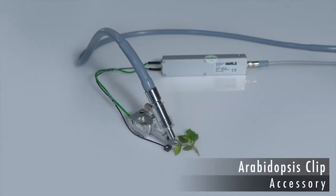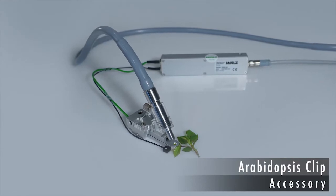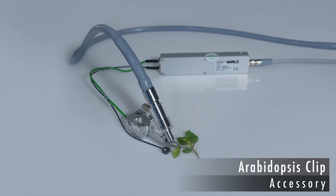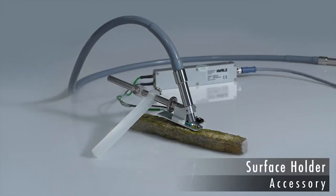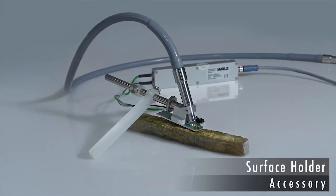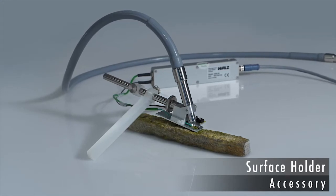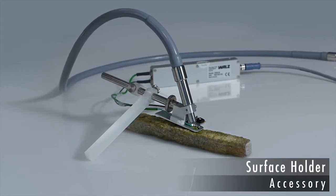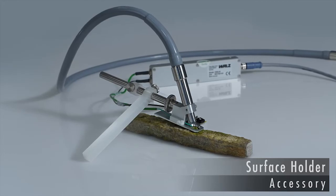The Arabidopsis leaf clip has been designed specifically for measuring small leaves. The surface holder is a positioning device for the fiber optics. It is most often used in studies of mosses, lichens and photosynthetic crusts.